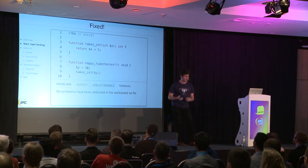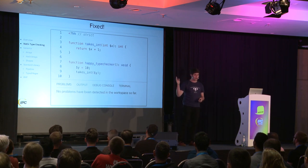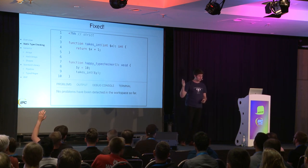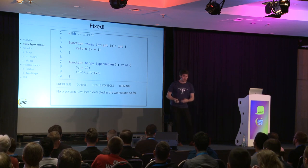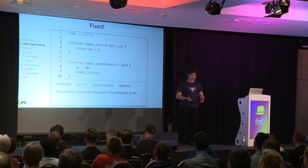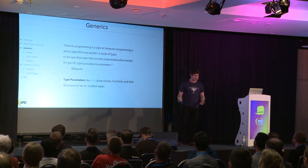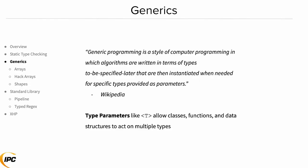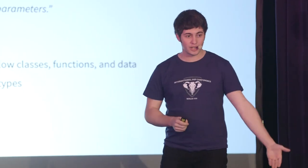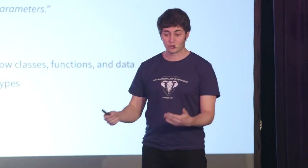You've probably had this experience if you've used an editor like PhpStorm. What I want to focus on is the features that Hack's type system has that PHP does not, and the first one that comes to mind is generics. Generics are a style of programming in which you write code in terms of types to be specified later, so you have functions and classes and data structures that can work with multiple different types, but you specify the type when you use it. They're denoted by this angle bracket T — a type parameter.